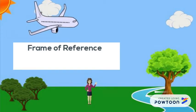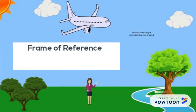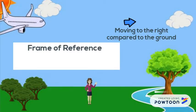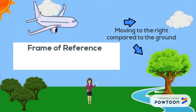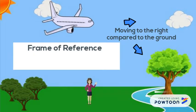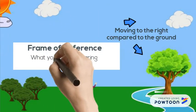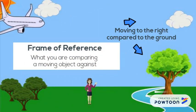A good frame of reference is an object that is not moving. For example, you know this plane is moving to the right by comparing it to the items on the ground, like this tree. A frame of reference is whatever you're comparing a moving object against.